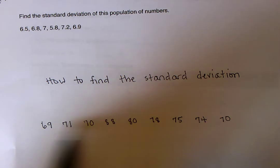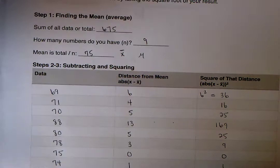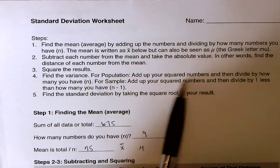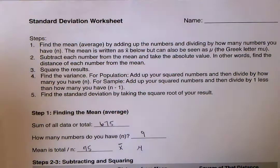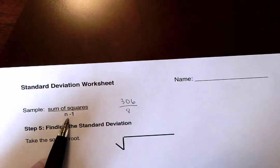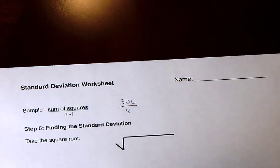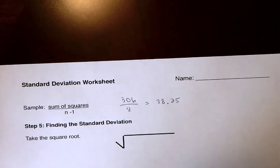Now let's consider it as a sample. Let's say this is only a fraction of the number of people in a class, or maybe somebody just took a sample of some of the scores in a group. So, if that's the case for step four, to find your variance, you're going to use this part here for a sample. Add up your squared numbers, which we found was 306, and divide by one less than how many you have. So instead of dividing by nine, you would divide by eight. That's the only difference with these two. So again, if we have a sample, we would take 306, and we would divide it by one less than nine, which is eight.